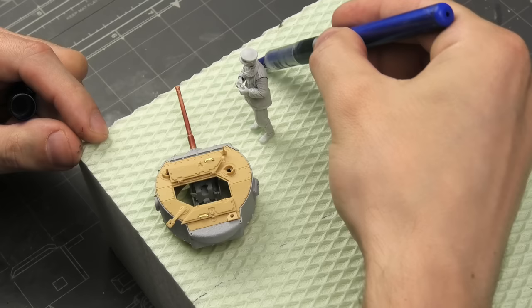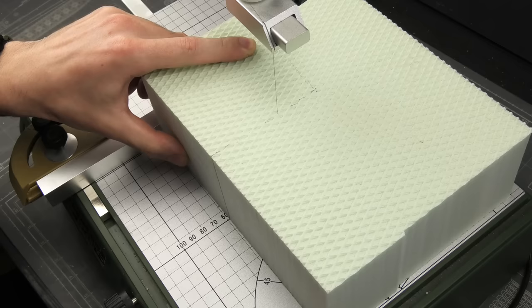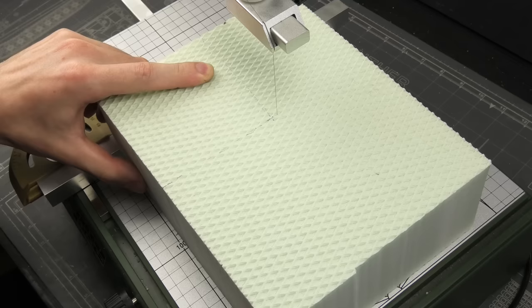That brings us to the initial composition using blocks of styrofoam. Vignettes usually tell a simple story in a very small area. I always start with a reasonable size and then can make it smaller if needed.